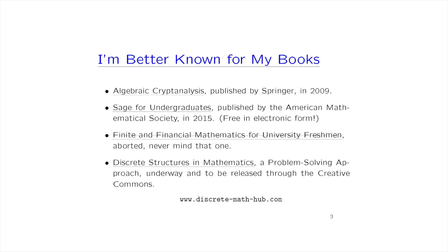I'm a little bit better known for the books I've written. I wrote a book about algebraic cryptanalysis, published by Springer in 2009. Then I wrote a book about the computer algebra system SAGE — free mathematical software that does the same thing as Maple, Mathematica, Magma, and MATLAB, but it's free. My book is free in electronic form on my webpage. I was working on a book for business students on basic financial mathematics, but that's crossed out now. Now I'm working on a book for discrete math with a lot of cybersecurity applications including crypto, and I'm going to release it to the Creative Commons — absolutely free.